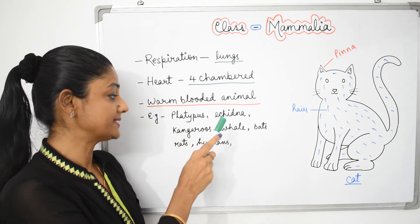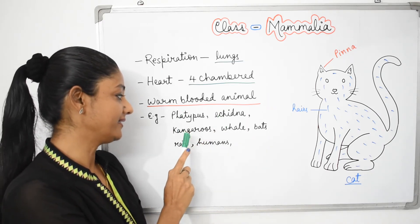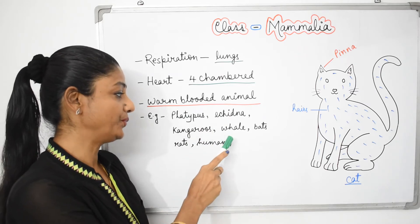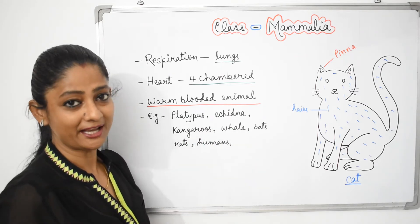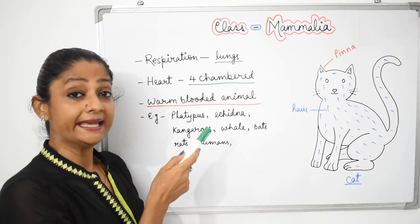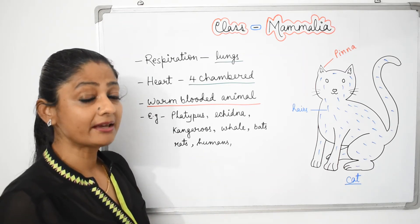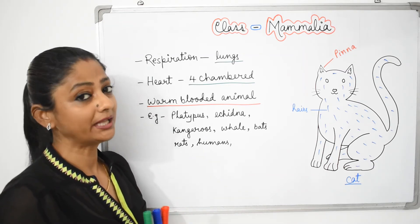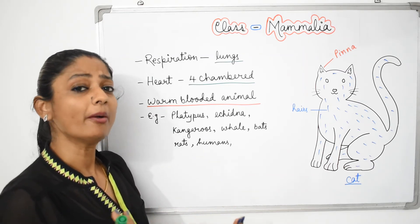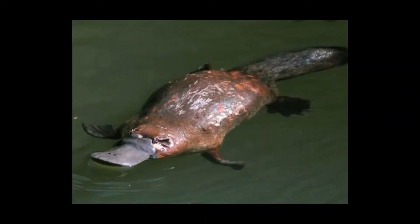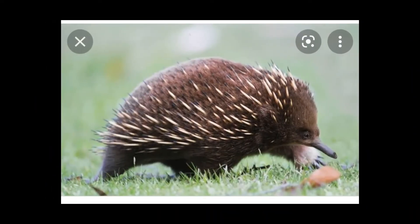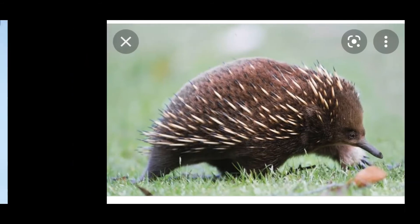Mammals have many examples, but our book gives: platypus, echidna, kangaroo, whale, bat, rat, and humans. Let's look at the real images of those mammals not commonly found around us. Here is platypus, here is echidna, and here is bat.